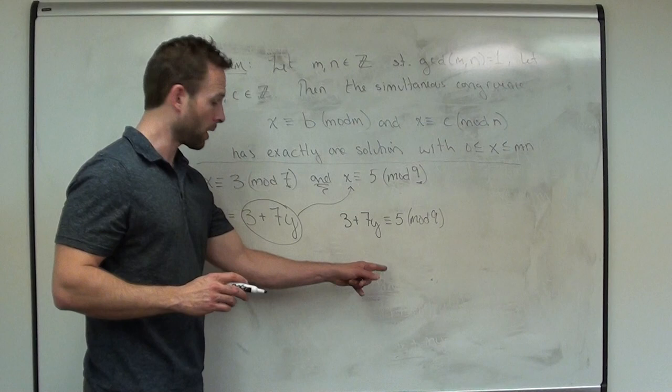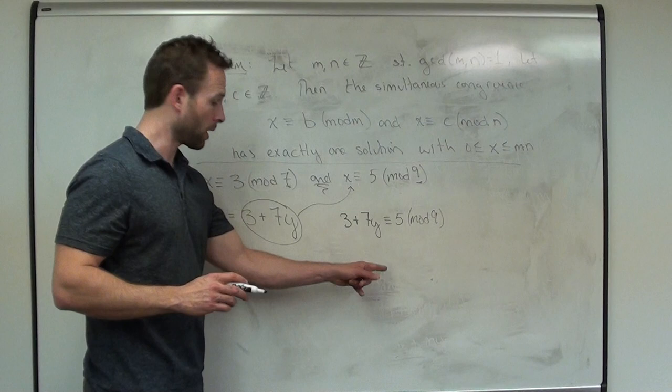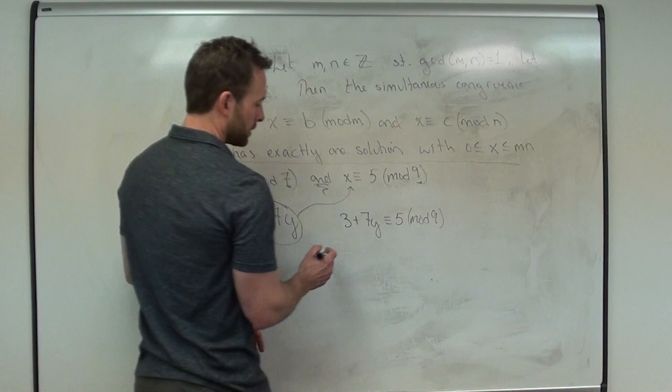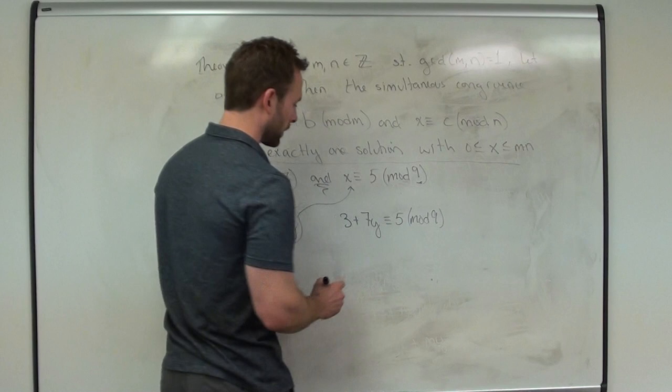Once we solve this for y, we can come back and substitute it back to get our overall system together. So we can subtract 3 from each side — remember we can't necessarily just divide all the time, so we've got to be careful. Subtracting 3 gives us 7y congruent to 2 mod 9.